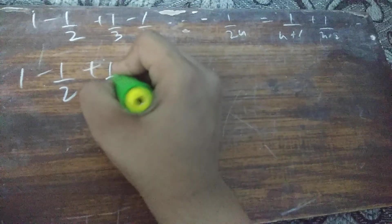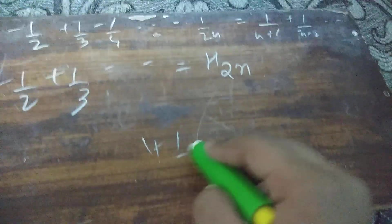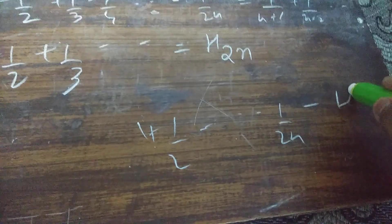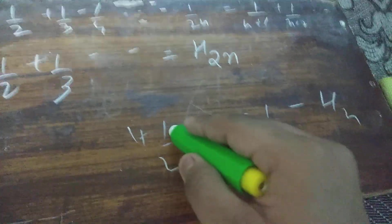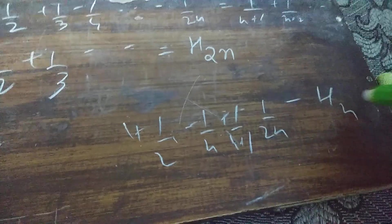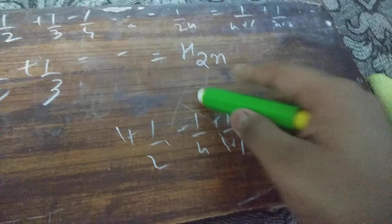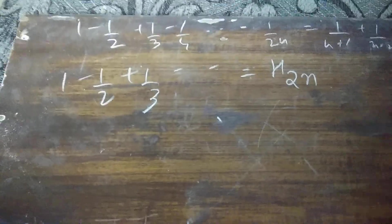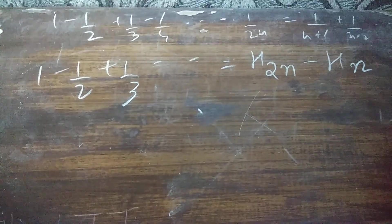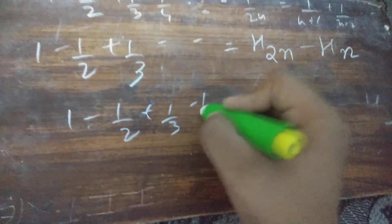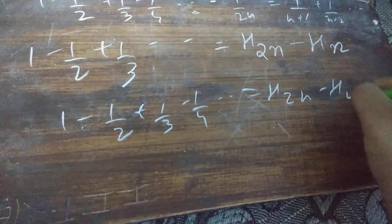We can see that 1 - 1/2 + 1/3 - 1/4 dot dot equals H_2n minus H_n, because the sum up to 2n minus the sum up to n leaves the terms from n+1 to 2n. Just to pay tribute to Mr. Euler we're writing it this way.